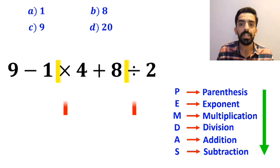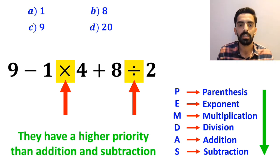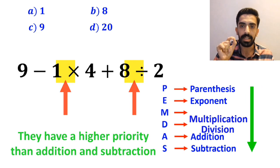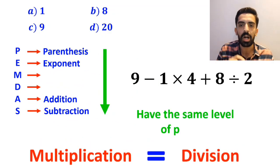In the next step, we need to go for multiplication and division, since they have a higher priority than addition and subtraction. However, it's very important to note that in the PEMDAS rule, multiplication and division have the same level of priority.